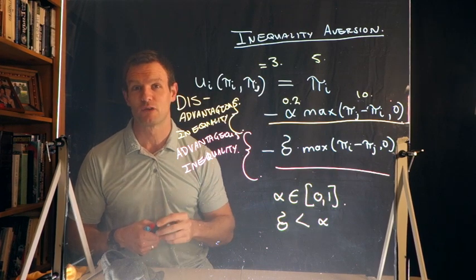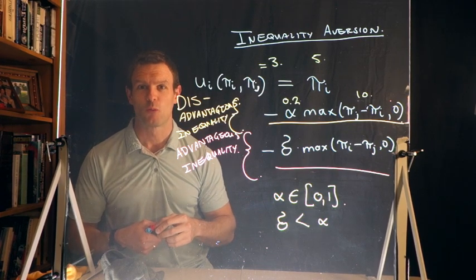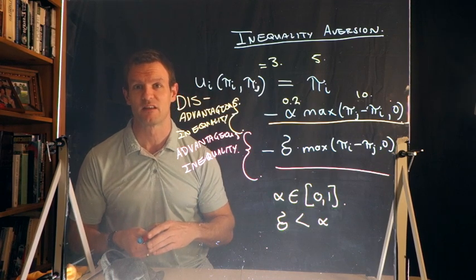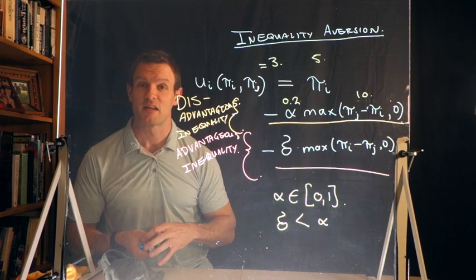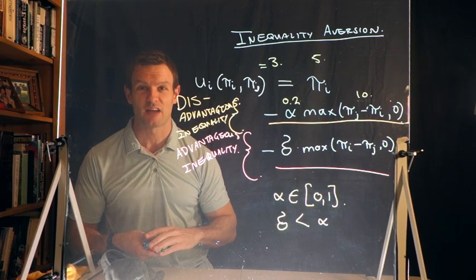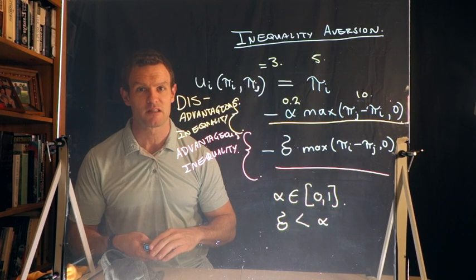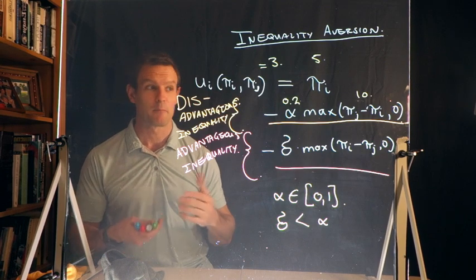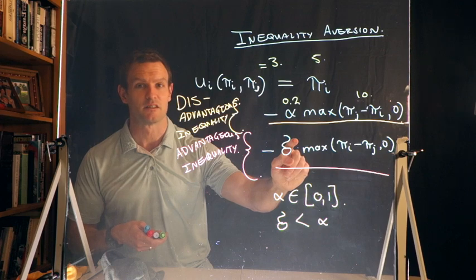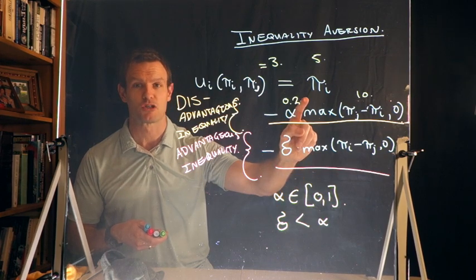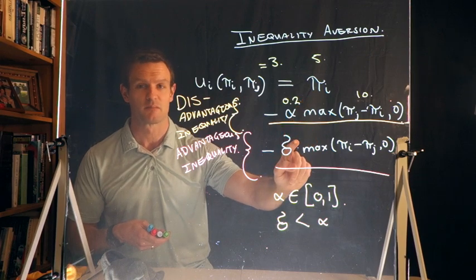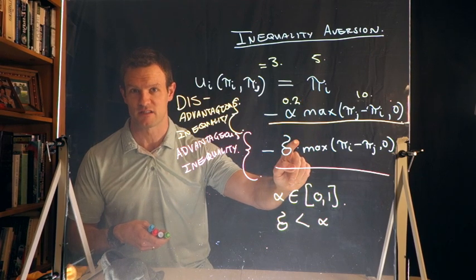Now this is going to be really important later when we want to understand why people might reject offers in the ultimatum game. Remember the ultimatum game from another video? We saw that people sometimes reject offers of positive amounts of money that other people offer them. That might come down to how we think about what their α and δ would be - α measuring their attitudes towards disadvantageous inequality, δ measuring their attitudes towards advantageous inequality.